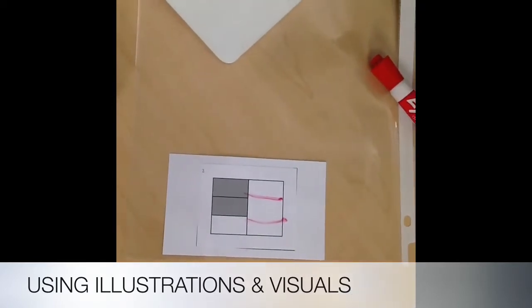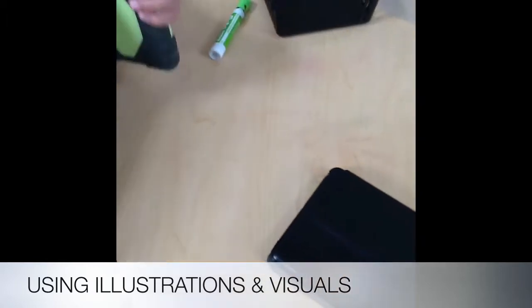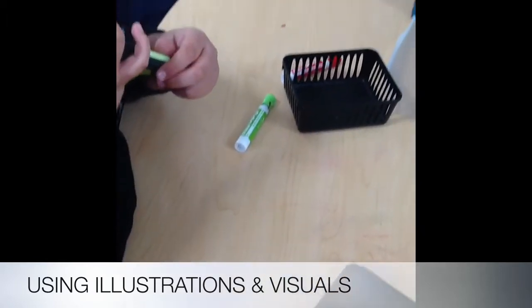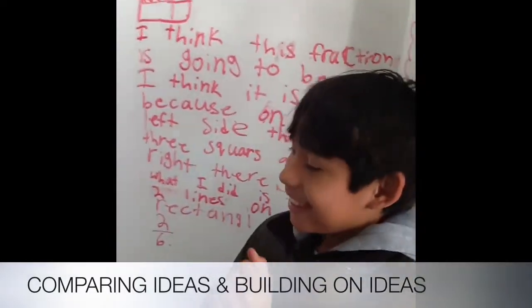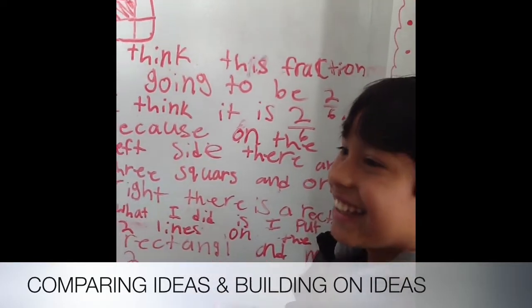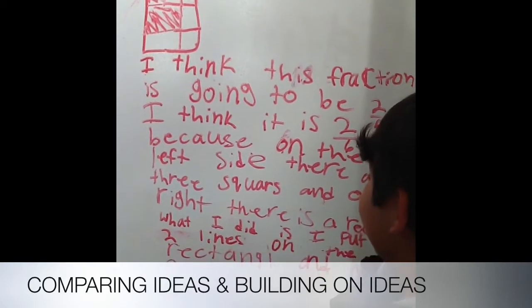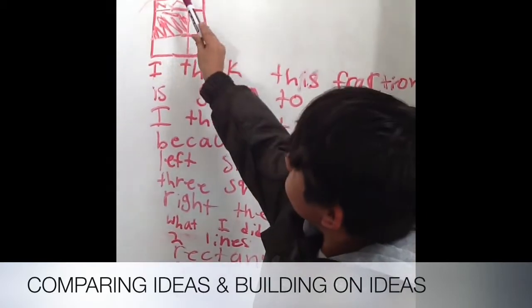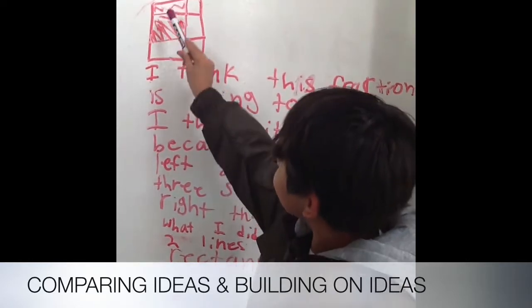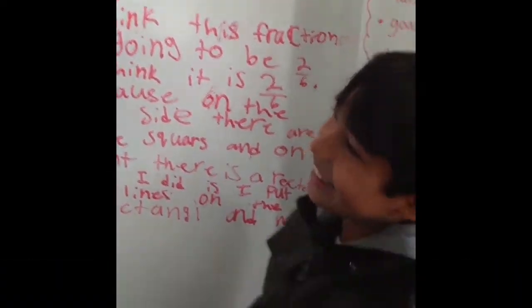Does anyone who can repeat what Jose said? Matthew, can you repeat what Jose said? He said he thinks the answer is 2-6 because there is two shaded in, and there's six boxes in.